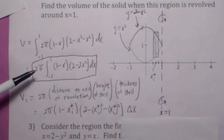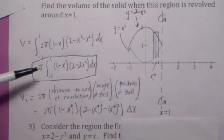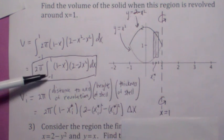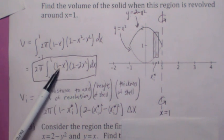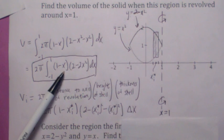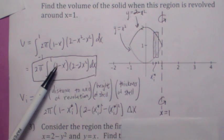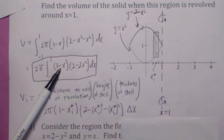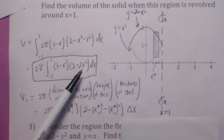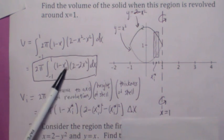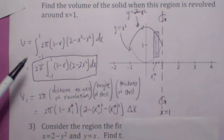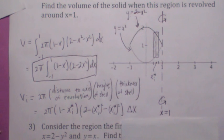So when you add those up and take the limit, you integrate from negative 1 to 1 of 2π times (1 minus x) times (2 minus x squared minus x squared), which becomes this. You cannot use symmetry on this particular problem because this function is not an even function — when you multiply an odd function, this is neither even nor odd. So don't use symmetry when you can't, otherwise you're going to get the wrong answer.